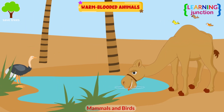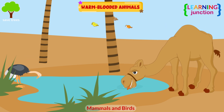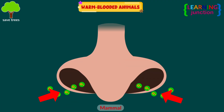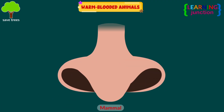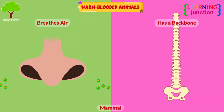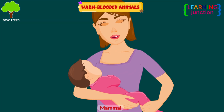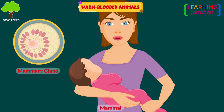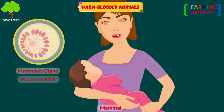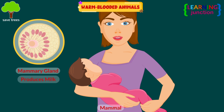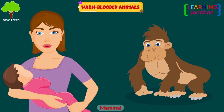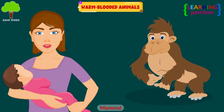Mammals and birds come into this category. A mammal is an animal that breathes air, has a backbone, and grows hair at some point during its life. In addition, all female mammals have glands that can produce milk — for example, humans and chimpanzees.